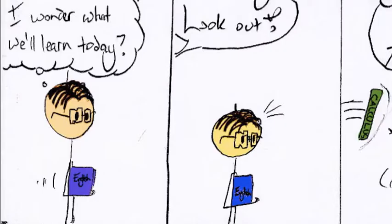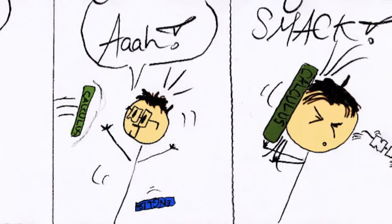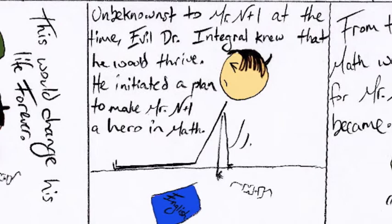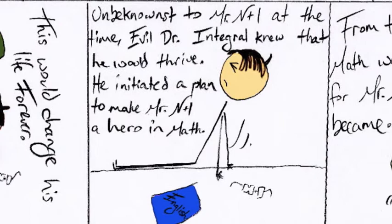When? I wonder what we'll learn today. Look out! This would change his life forever. However, unbeknownst to Mr. N-plus-1 at the time, evil Dr. Integral knew that he would thrive. He initiated a plan to make Mr. N-plus-1 a hero in math.